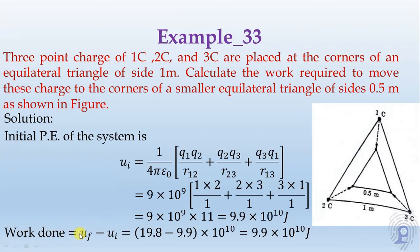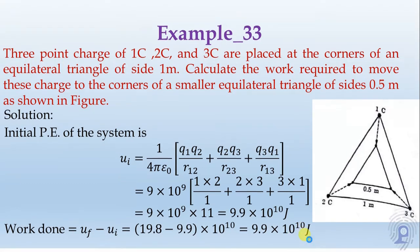Work done equals final minus initial potential energy. The calculation gives 19.8 minus 9.9 equals 9.9 into 10 to the power 10 joules. Thank you.